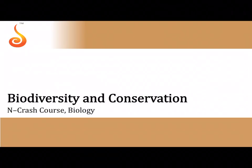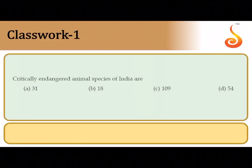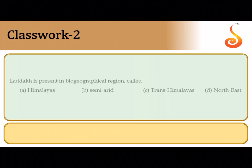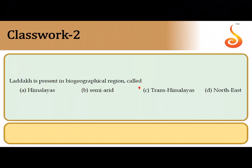Moving on to the next chapter, Biodiversity and Conservation. About 31 different critically endangered animal species have been identified in India, so the correct answer for that question is option A. The second question asks which biogeographical zone includes Ladakh — the answer is option C, the Trans-Himalayan range.